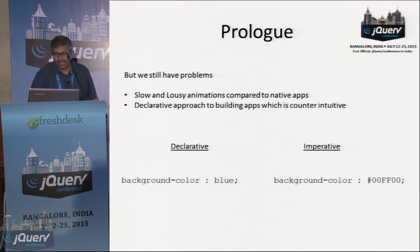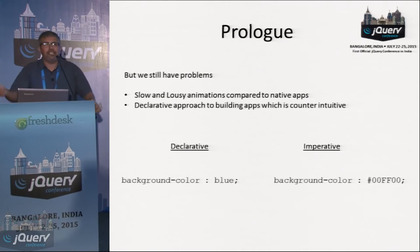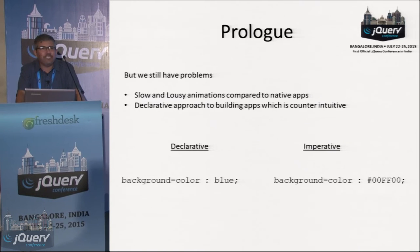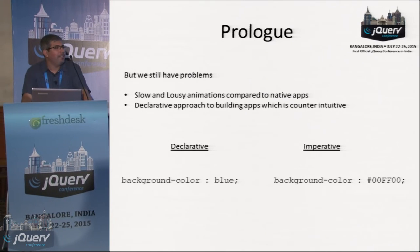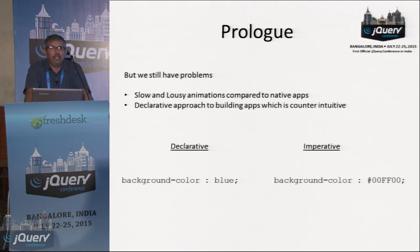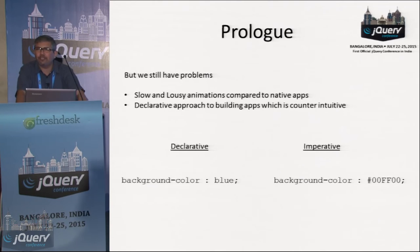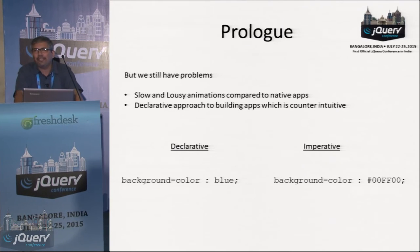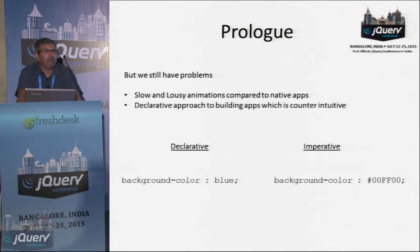To give a small example: if you say background color is equal to blue, that blue could mean different shades of blue in different browsers and machines. Whereas if you specify the exact hex code of that color, the browser will exactly know which shade to render. But there are millions of color shades - you cannot declare names for all those shades. You can only have red, blue, green, and a few shades. This is the declarative way of coding. Whereas if you specify the exact shade using code, that is the imperative way of coding.